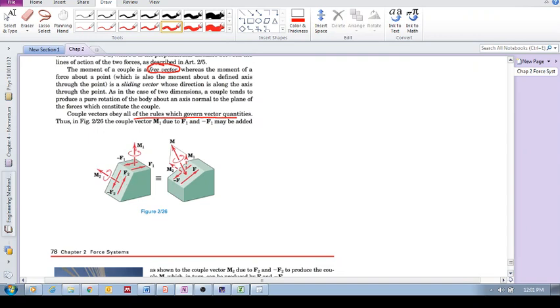You can simply add those vectors up, M1 and M2, and get a resultant moment using the parallelogram method.